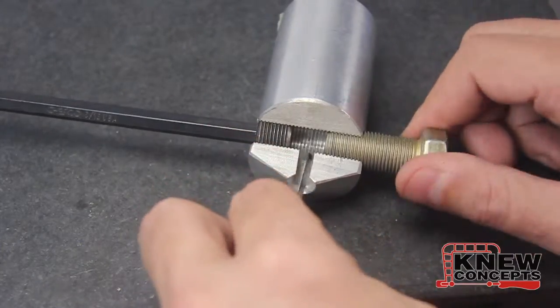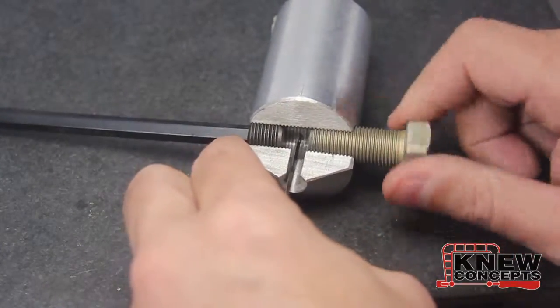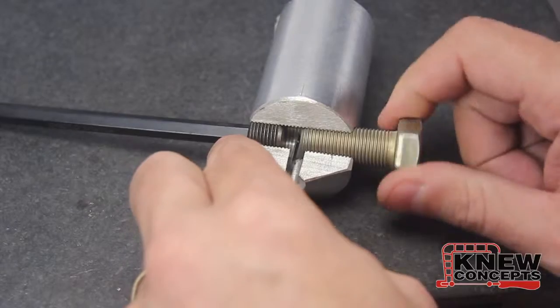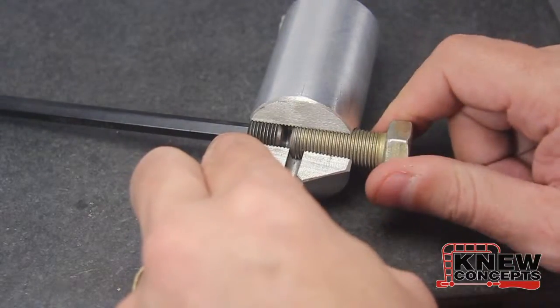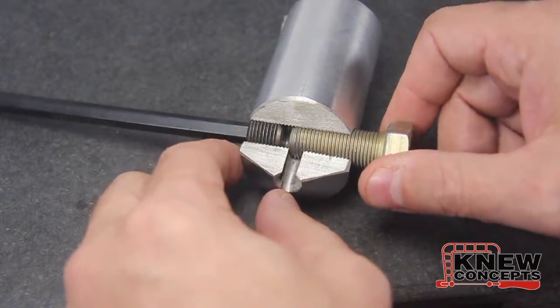So if I come in with the knob and go to tighten the blade, watch what happens. People talk about the saw blades nipping the ends off their blades.